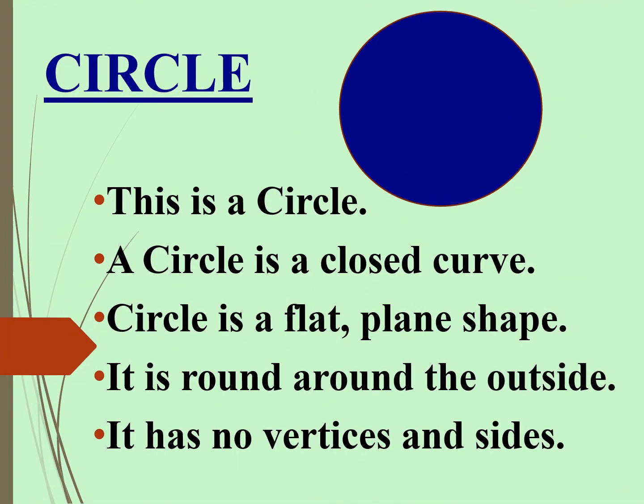Circle. This is a circle. A circle is a closed curve. Circle is a flat, plain shape. It is round around the outside. It has no vertices and sides.